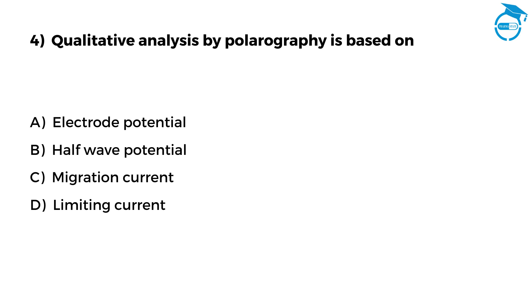Here it is. Qualitative analysis by polarography is based on. Option A, Electrode Potential. Option B, Half-Wave Potential. Option C, Migration Current. Option D, Limiting Current. Mention your answer in the comments. Your time starts now.